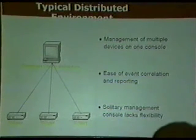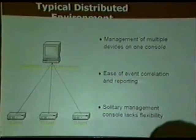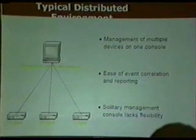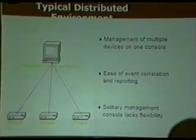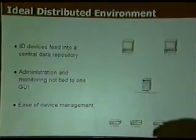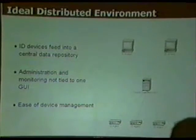In a distributed system — with products such as ISS, Axent, or CyberSafe for host-based — multiple agents report back to a command console that can push down information, making event correlation easier. However, the two-tiered relationship means only one analyst can operate at a console at a time. Ideally, a distributed environment would have many agents — host, network, network node, and file integrity — reporting to a central repository with a GUI client at each analyst's desktop.